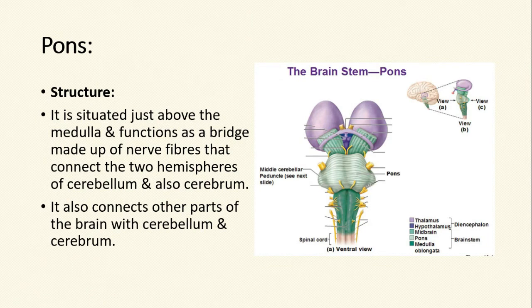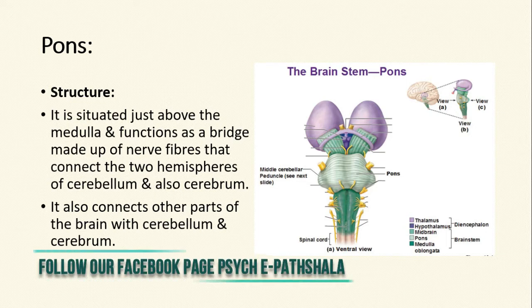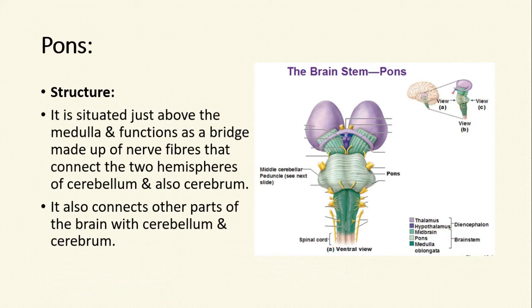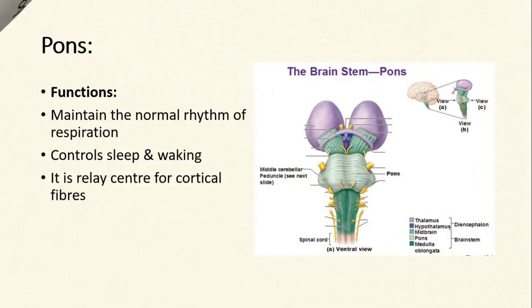Structurally, the pons is situated just above the medulla and functions as a bridge made up of nerve fibers that connect the two hemispheres of cerebellum and also the cerebrum. It also connects the other parts of the brain with cerebellum and cerebrum. Functionally, the pons maintains the normal rhythm of respiration, controls our sleep and waking state, and it is also the relay station or relay center for cortical fibers.